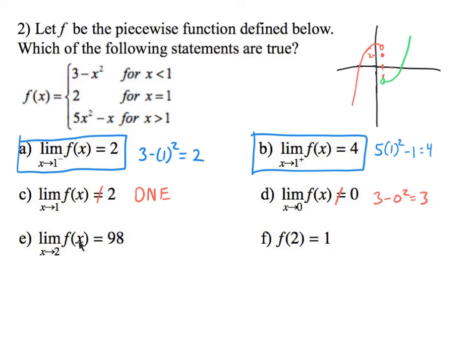Okay, next. The limit of f(x) as x approaches two, does that equal 98? So two, where's two at? Two is on this interval, greater than one. It's on this green graph, so it's over here. So I'm going to plug in two to this function. All right, so what do we get there? That would be 5(2)² - 2.